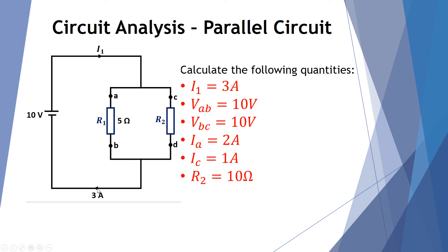So for this parallel circuit: the current before and after the branch is 3 amps. The voltage in the branch containing R1 equals the supply of 10 volts, and the voltage in the right-hand branch containing R2 also equals 10 volts. Using Ohm's Law we found 2 amps in the left-hand branch, and since 3 minus 2 equals 1, there's 1 amp in the right-hand branch. Using Ohm's Law with 1 amp and 10 volts, R2 is 10 ohms. I hope this has made sense — please review this again if needed. Thanks for watching.